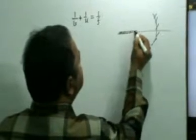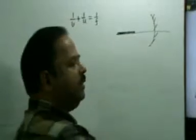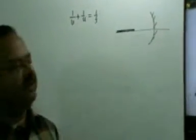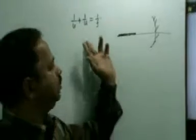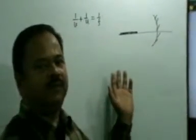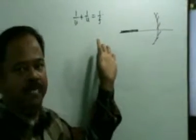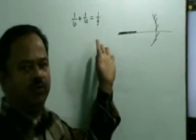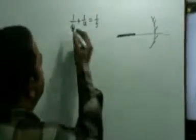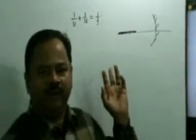This object lies around the principal axis, so what is going to happen with the magnification? The magnification is -v/u. Now we can differentiate this. Differentiating 1/v gives us minus 1/v².